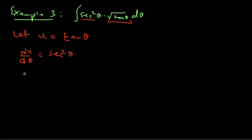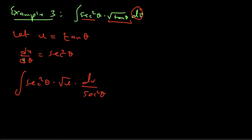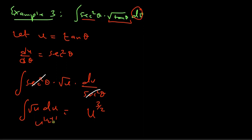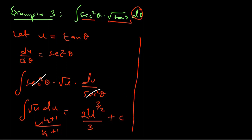Doing the substitution, I rewrite the integral as sec squared theta times the square root of u, and for d theta I write du over sec squared theta. The sec squared theta cancels, leaving the integral of square root of u with respect to u. This is u to the power 3 over 2 divided by 3 over 2, which gives 2 over 3 plus the constant. Substituting back, the final answer is 2 over 3 times tan theta to the power 3 over 2 plus a constant.